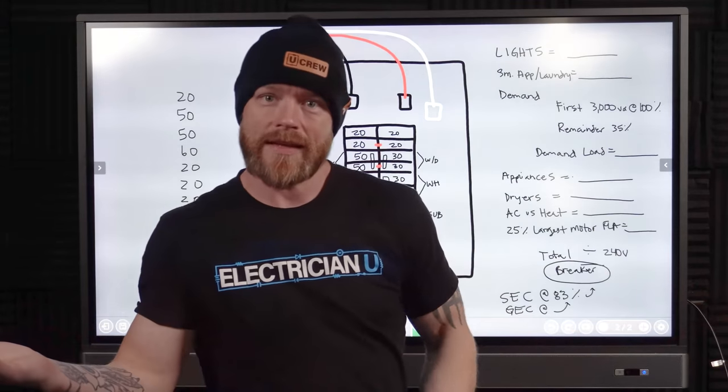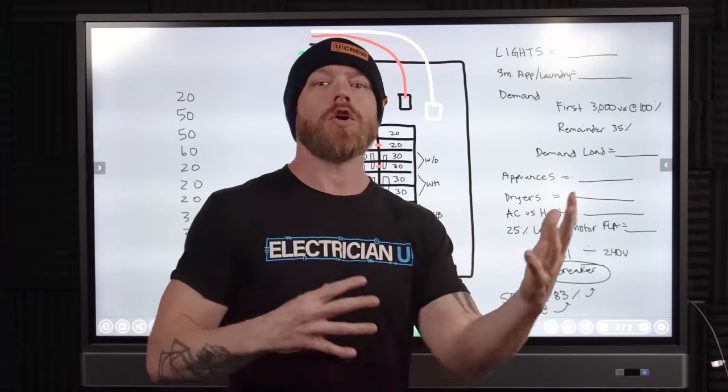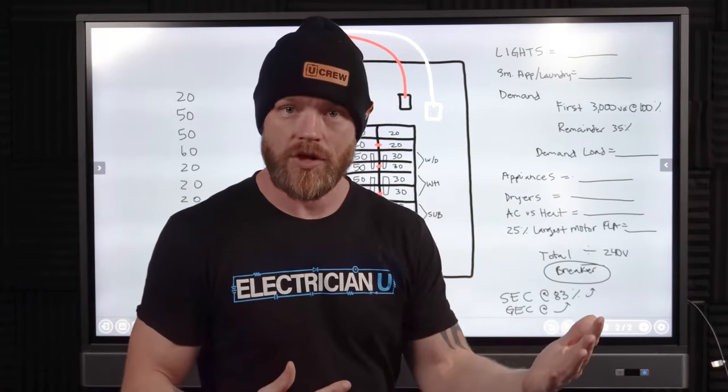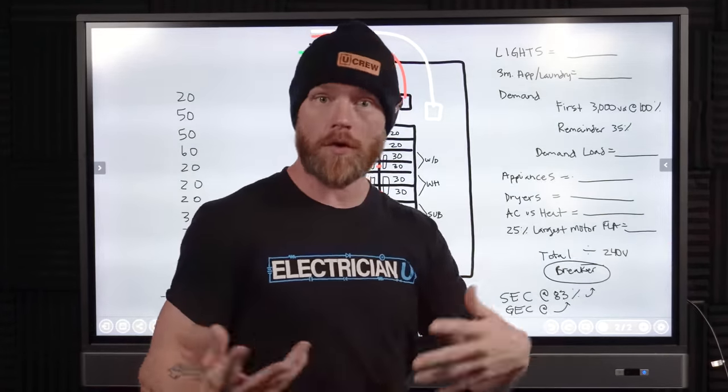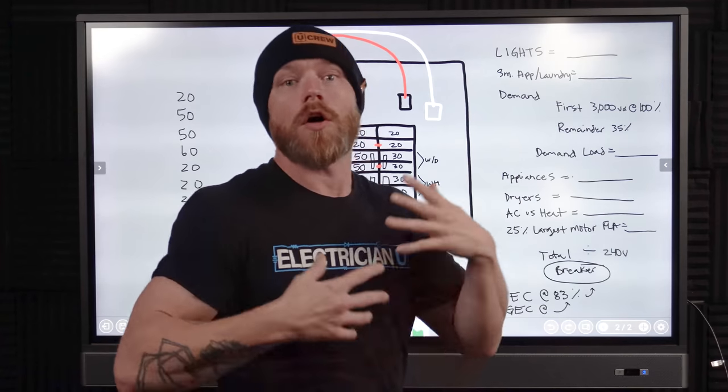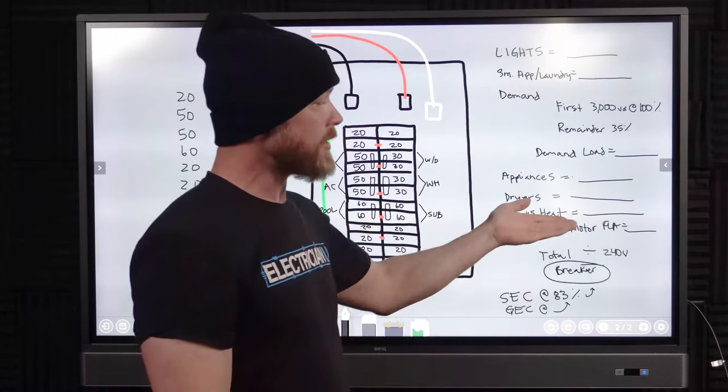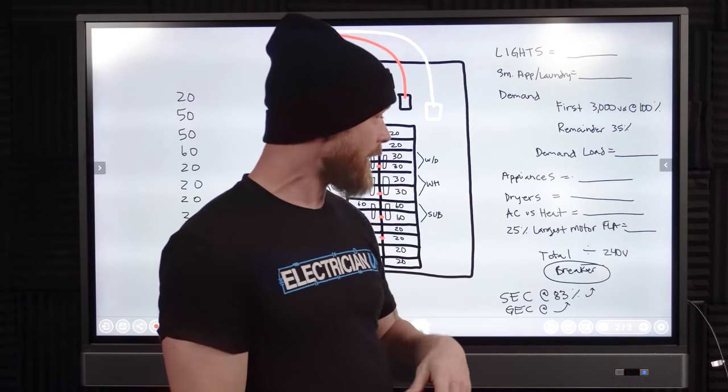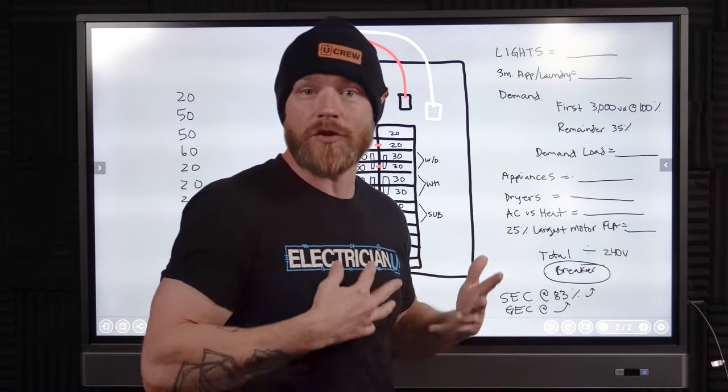AC versus heat. Well, you're never running AC and heat at the same time. So you have these kind of non-coincident loads where you have like things that aren't going to really interact with each other. So you usually take the bigger one, whichever is higher, your heat or your AC. Then we have largest motor FLA. So if you have other motors in your house, for some reason, you've got other kind of crazy things. We allow like a percentage of the nameplate rating of that motor to be added to its own line.